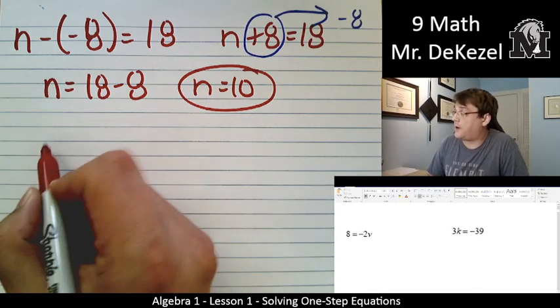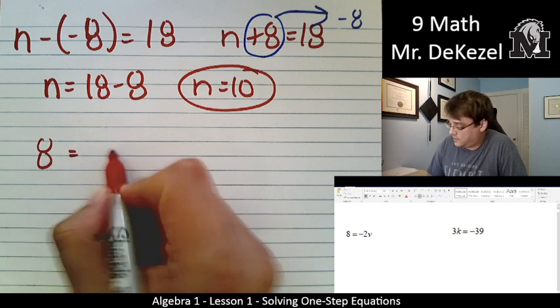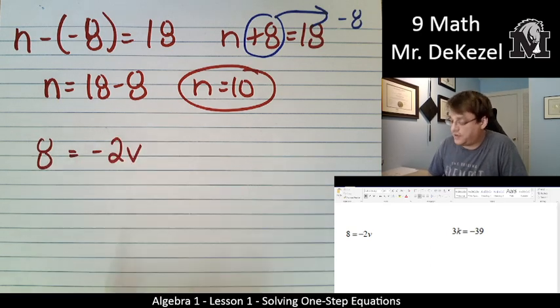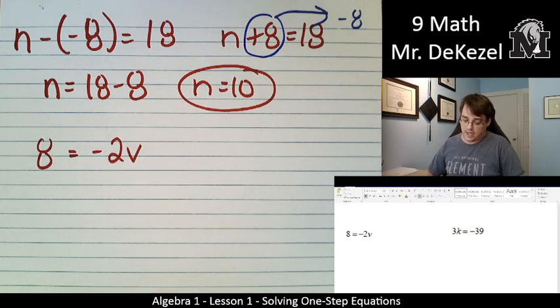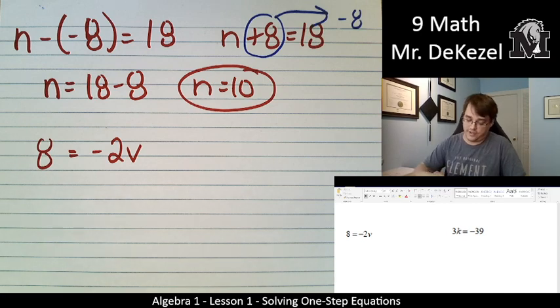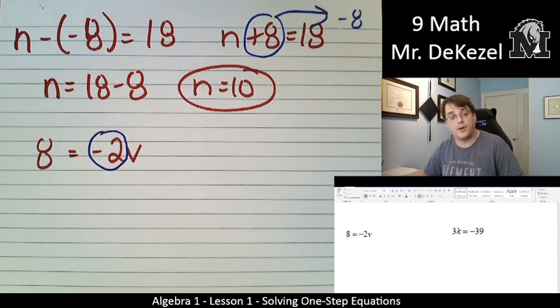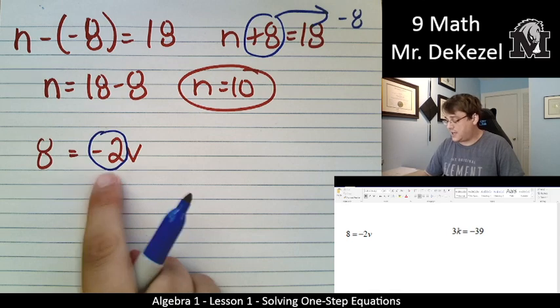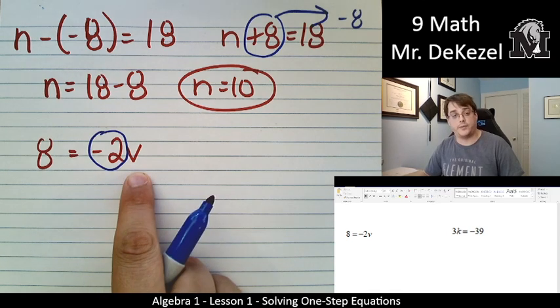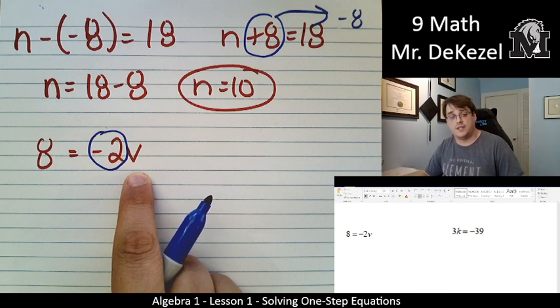Right. We've got another problem here. We've got 8 equals negative 2v. Again, we want to get v all by itself. To solve for v, we are going to isolate v. So we want to get this onto the other side. This time, it is multiplied by our variable. So we are going to, when we move it to the other side, do the opposite, which is dividing.